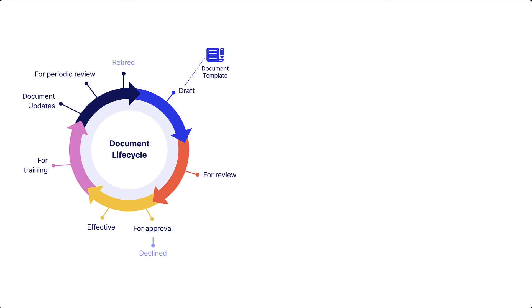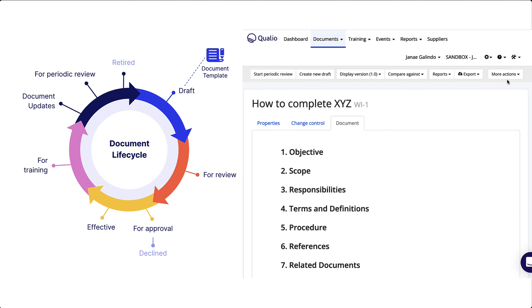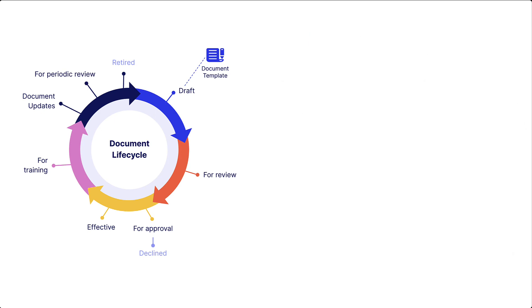The final step in the document lifecycle is to retire a document. You'll need to do this for outdated procedures and work instructions, which will inevitably happen as your organization grows and develops. Once you've selected the document, you can retire it from the More Actions dropdown. But the document will continue to exist in perpetuity within your document workspace for as long as you use Qualio as your eQMS. Maintaining records for a required number of years is another document control regulatory requirement, and a huge improvement upon paper-based quality management systems that require physical, expensive storage.